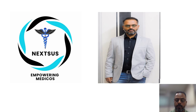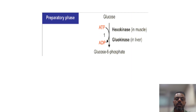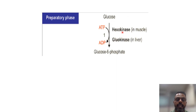So let's start. First, we will see what is the function of hexokinase and glucokinase. We all know the first step of glycolysis — glucose is phosphorylated into glucose-6-phosphate, and this irreversible step is catalyzed by both hexokinase and glucokinase. Hexokinase catalyzes this step in all tissues, specifically in muscle, while glucokinase catalyzes this step only in the liver.